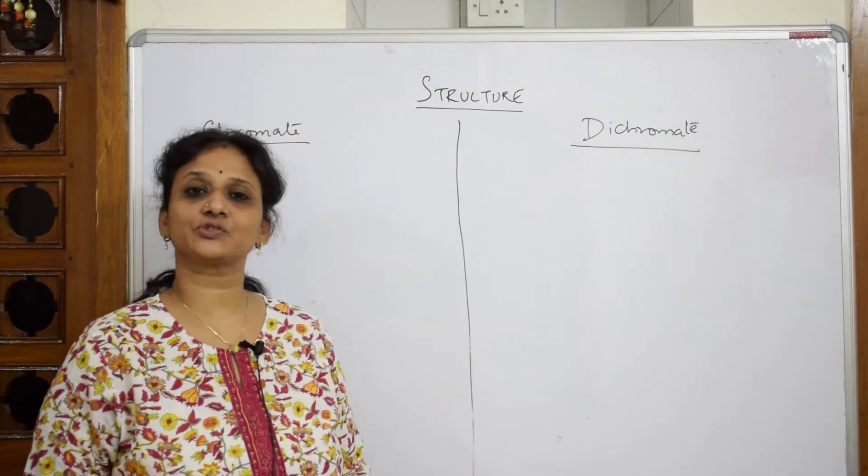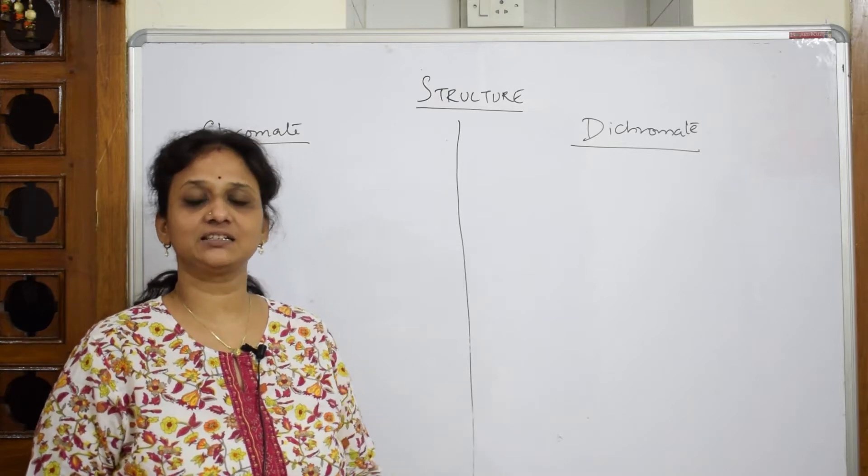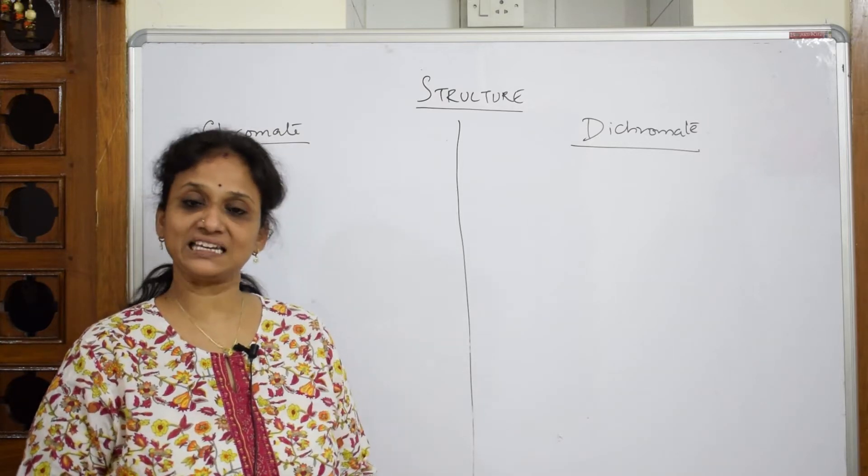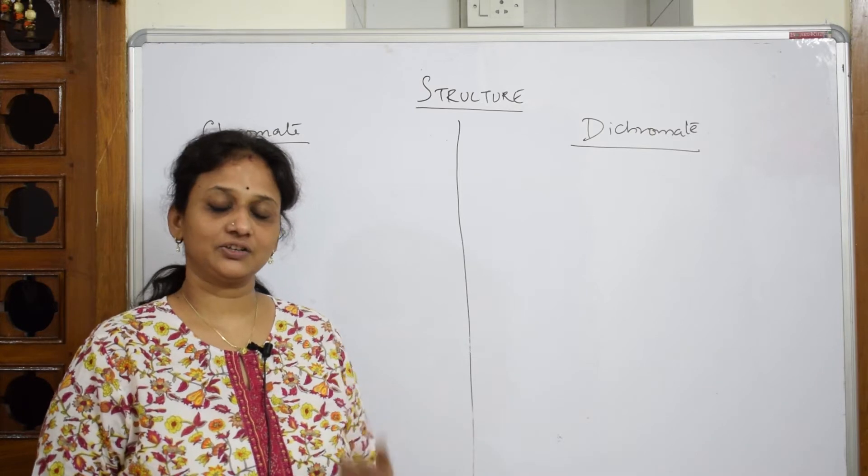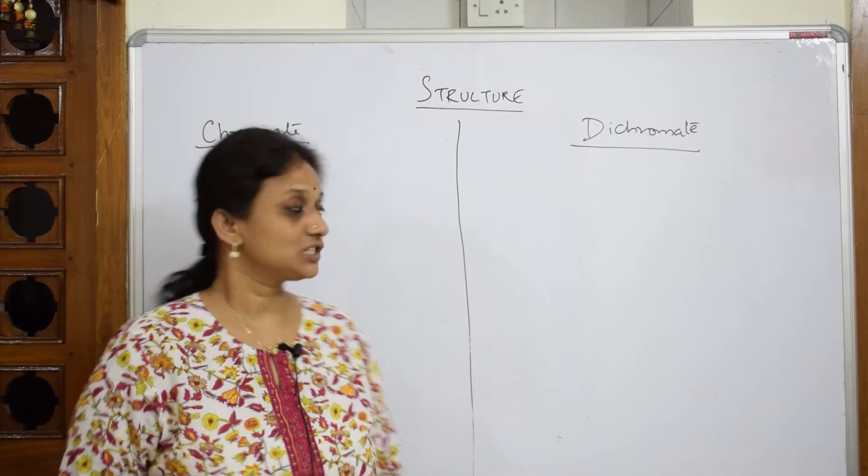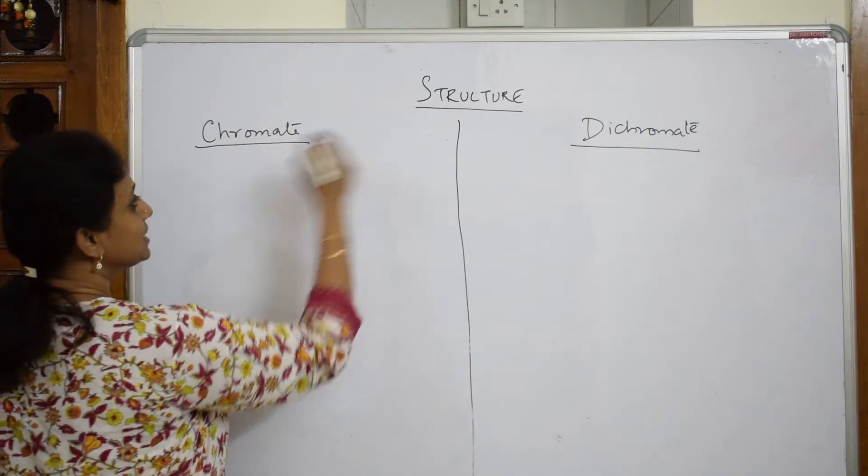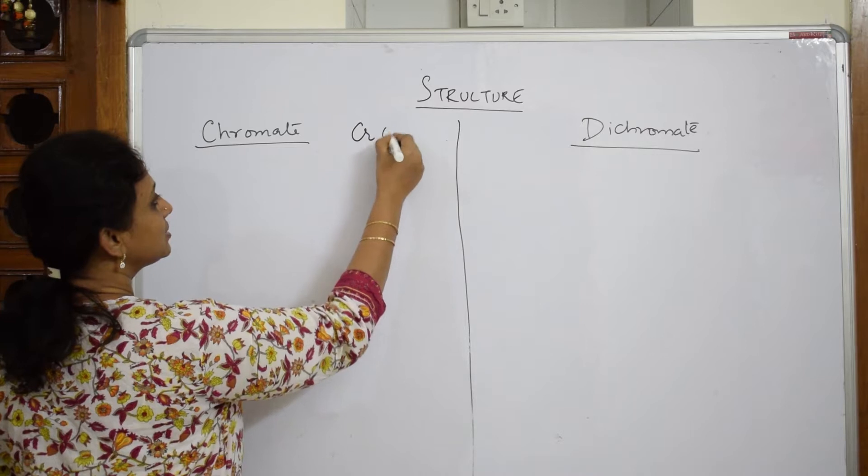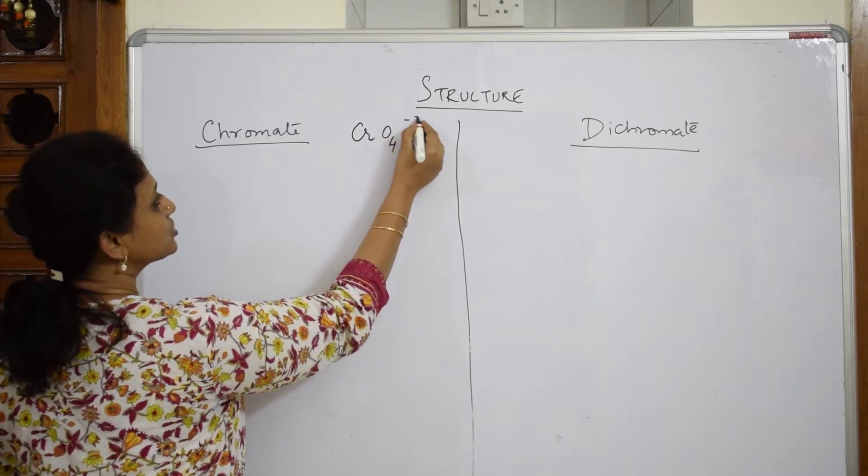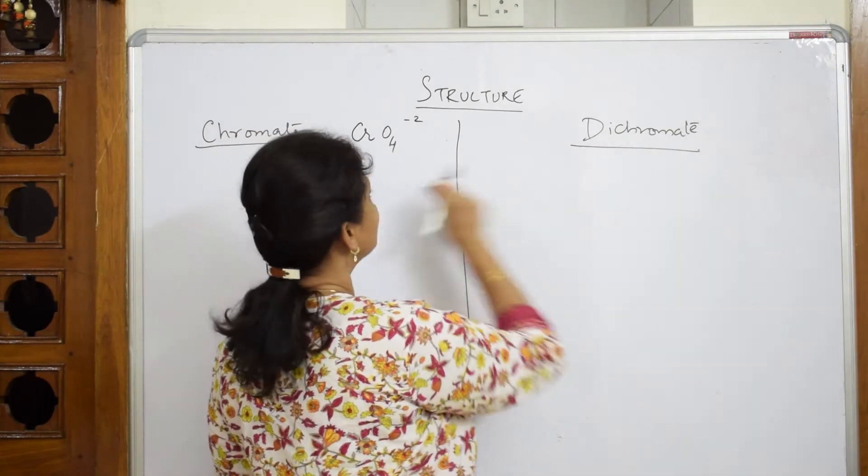Let us come back and learn the structure of chromate and dichromate ion. As we have studied in potassium permanganate, manganate and permanganate ions, here you are going to study about chromate and dichromate. So whenever I speak about chromate ion, the formula for this is CrO4²⁻. The overall charge is minus 2.